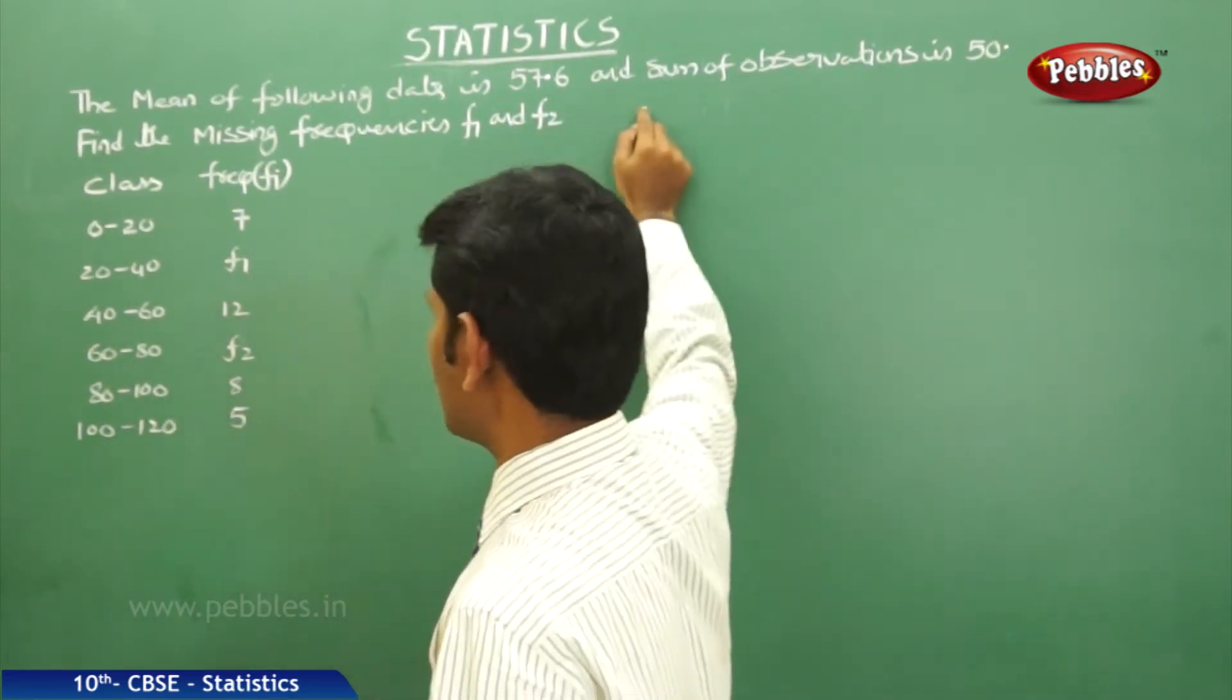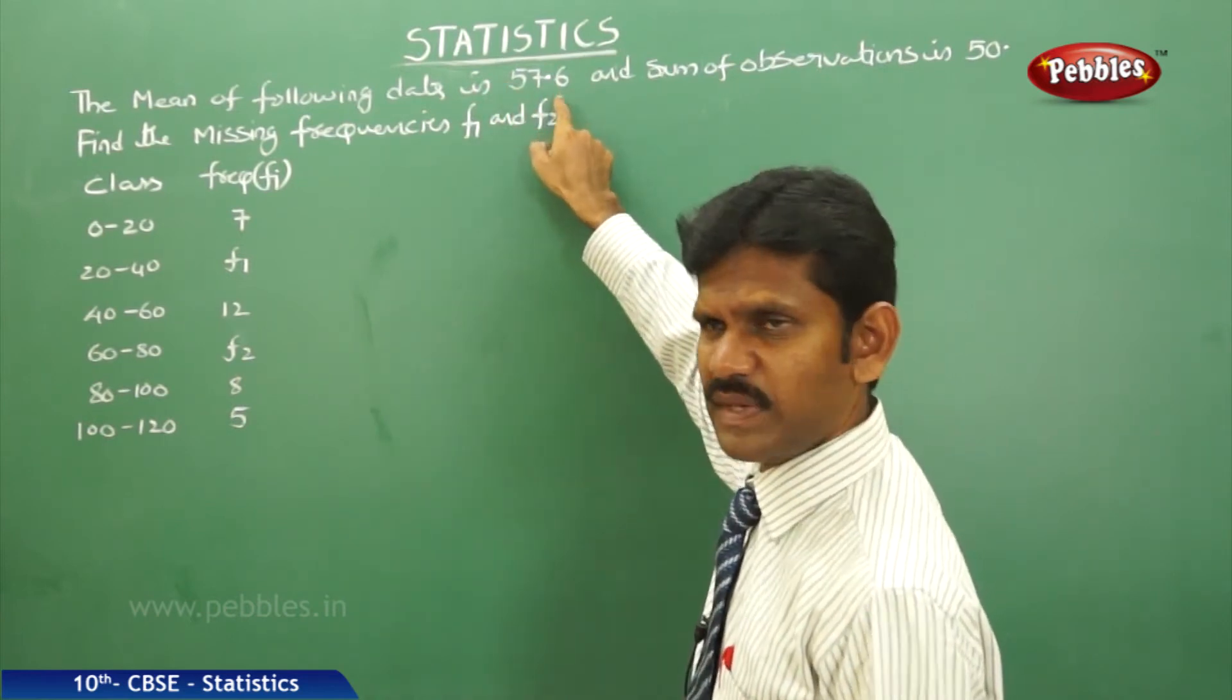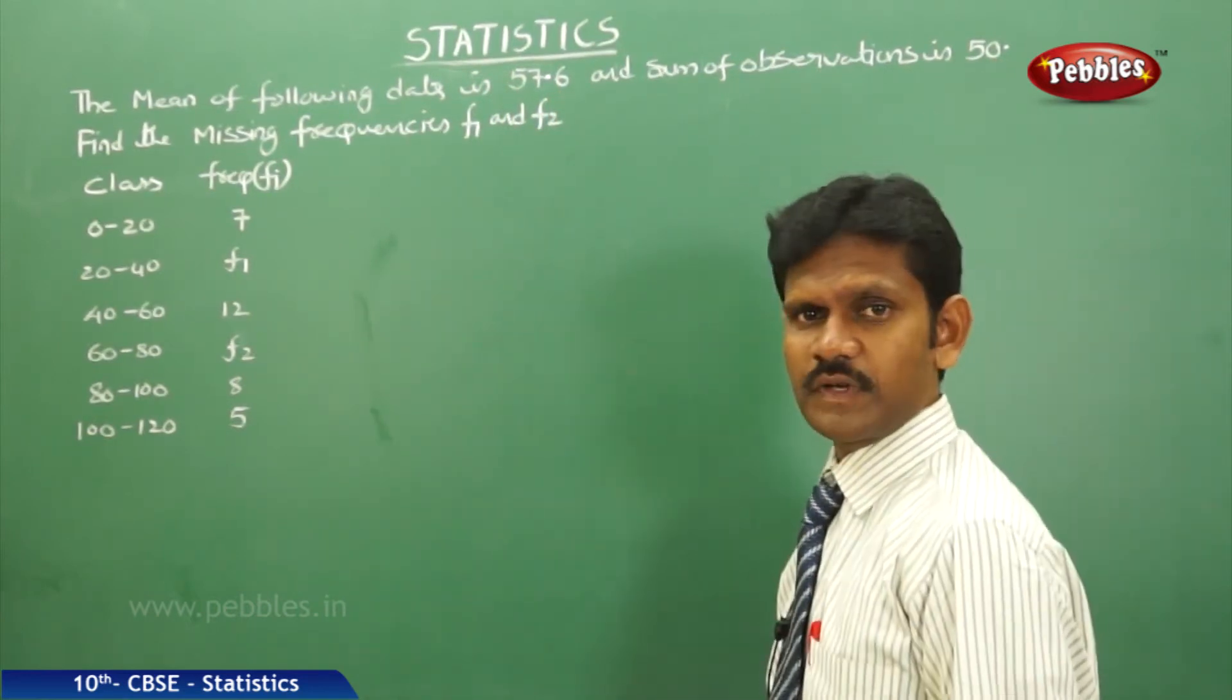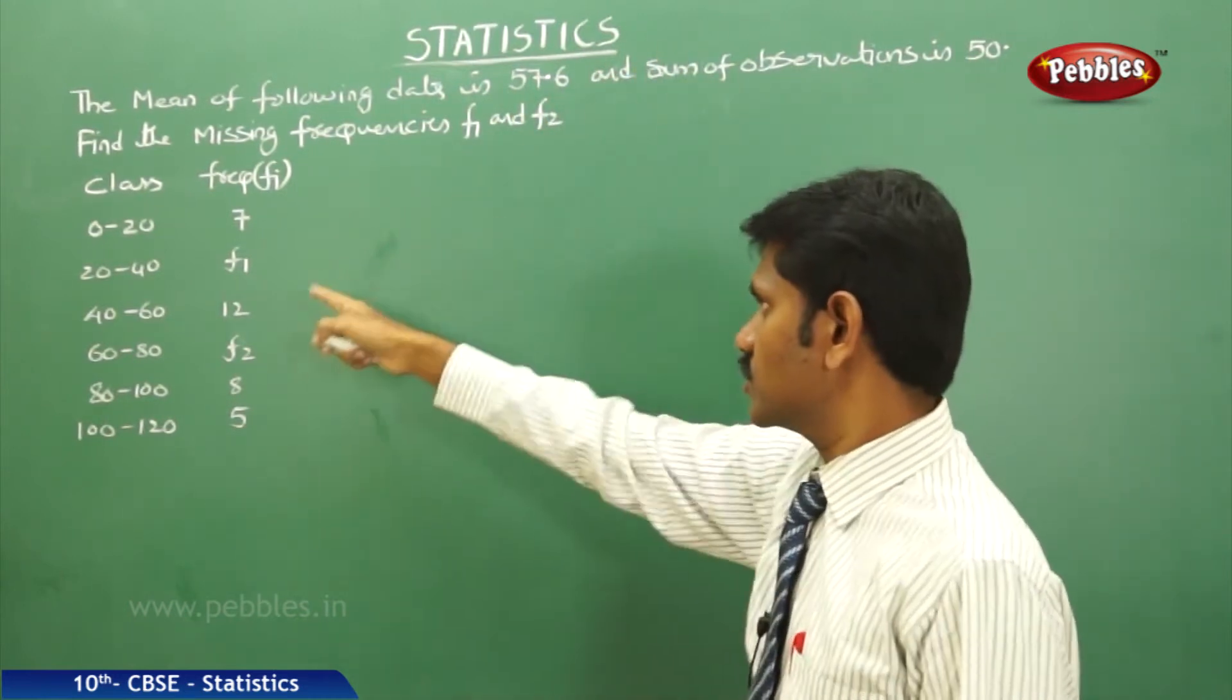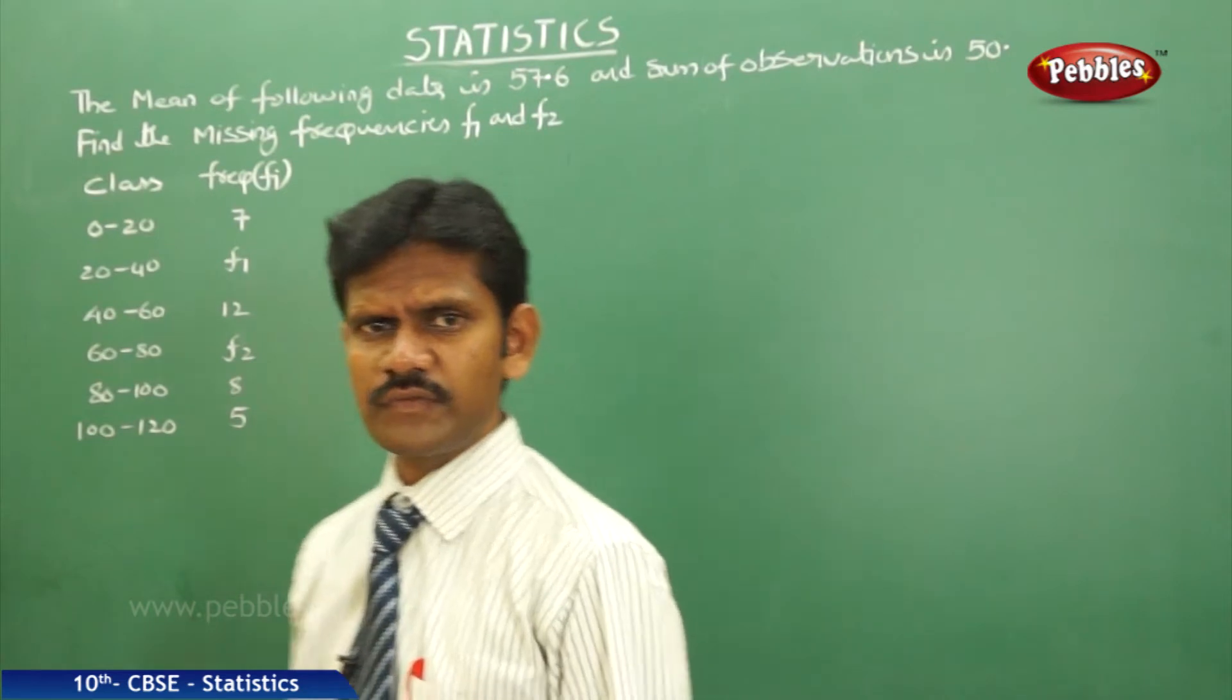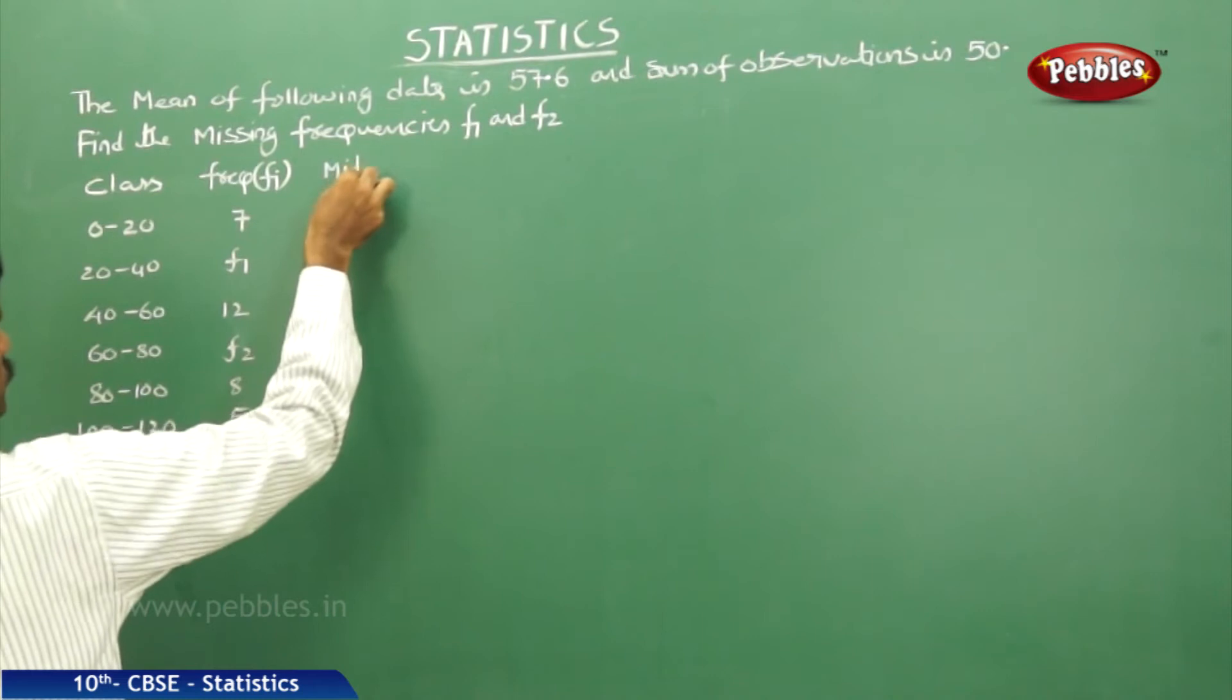Using this information, by using what information? 57.6 is the mean and N is equal to 50. Just by using these values, you can find out the values of F1 and F2. Now, let us see the next part, the mid values.